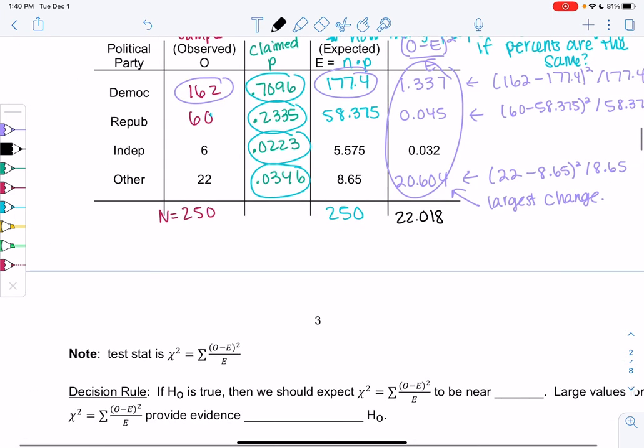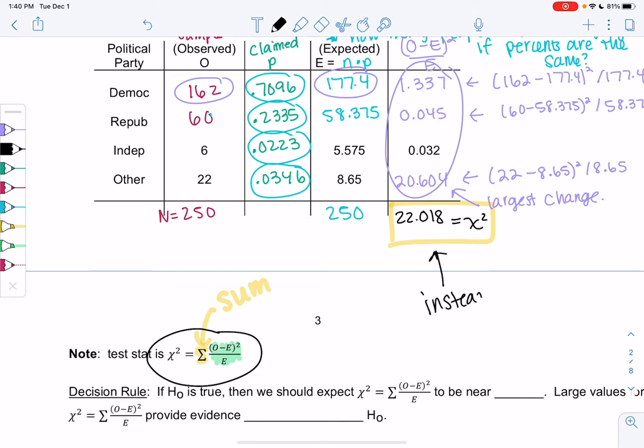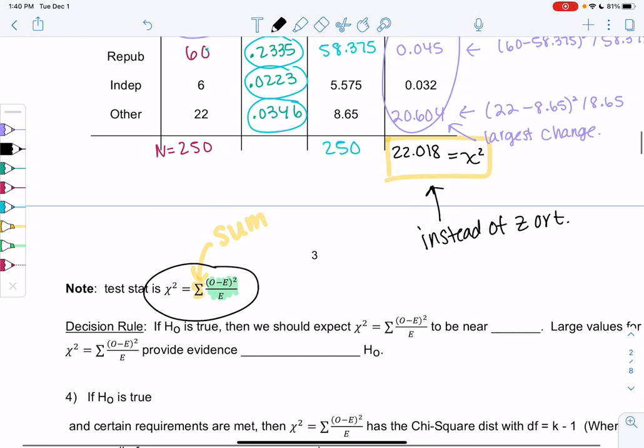We add up that column and we get a total of 22.018, and that is our test stat, our chi-square value. The formula is telling me to find the sum - that fancy symbol means sum. So that means we want a total. We found the O minus E squared over E column. This is what we're going to use instead of Z scores. 22 looks big, but chi-square is just a different curve, so I don't really know if this is big or not yet. We did a lot of work for it, but we're finally done.